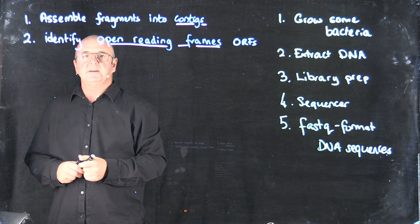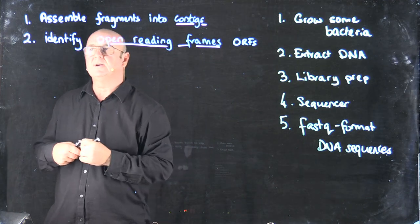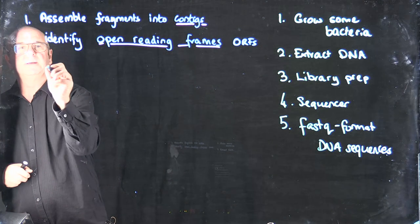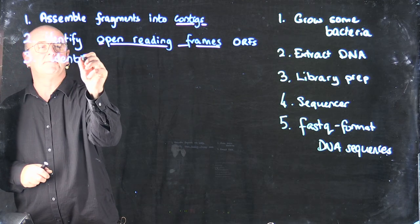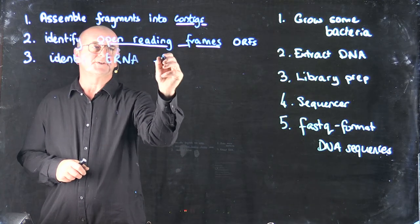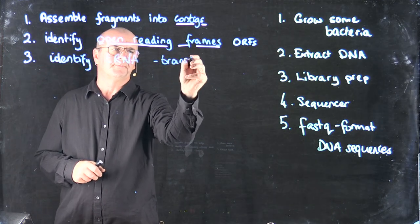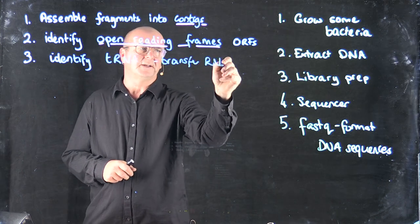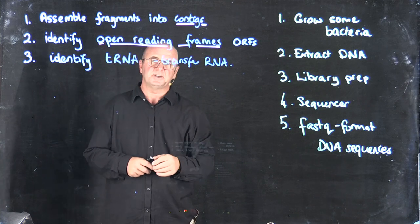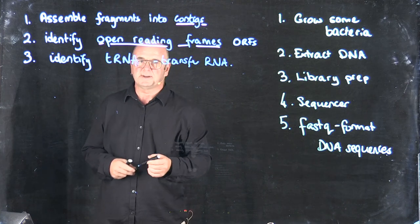After identifying the open reading frames, the next step is to identify the tRNA genes. These are transfer RNA. We'll talk about exactly what it is that transfer RNA genes do when we get to the point of identifying them.